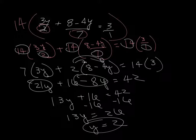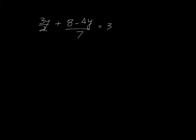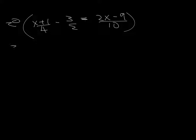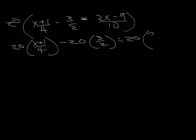Alright, so let's jump into the last one, and we will be done. Alright, last one. X plus 1 over 4 minus 3 over 2 equals 2x minus 9 all over 10. Okay, common denominator here is going to be, let's see, 20. 4 goes into it, 2 does, and 10. So let's multiply the whole thing by 20. So 20 times x plus 1 over 4 minus 20 times 3 halves equals 20 times 2x minus 9 over 10. Let's multiply these out.